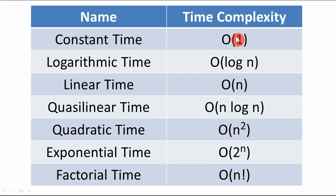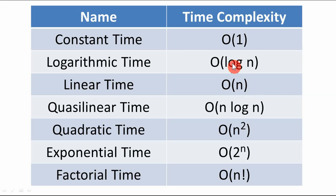If there is only one statement to execute, time complexity is O(1), the most efficient. Suppose you have 10 data values in a list and need to search for an item — that could be linear time complexity O(n), where as n increases, operations increase in the same proportion. Logarithmic time complexity is more efficient than linear because each time the number of operations does not increase in the same proportion — the increment is less than linear.